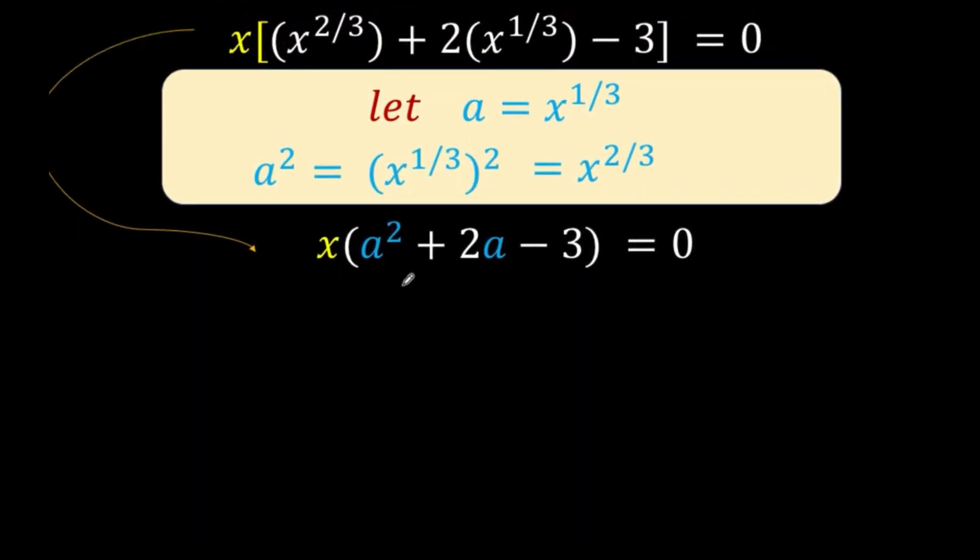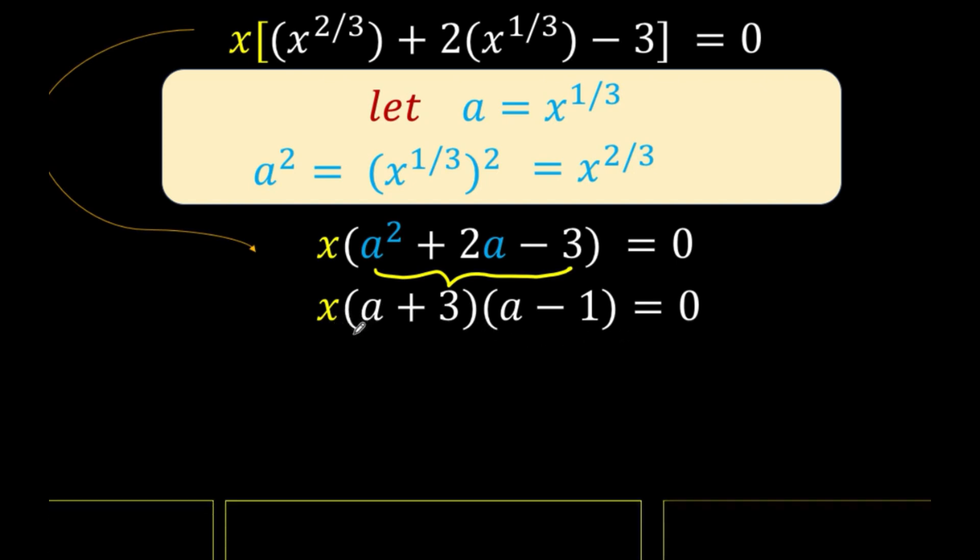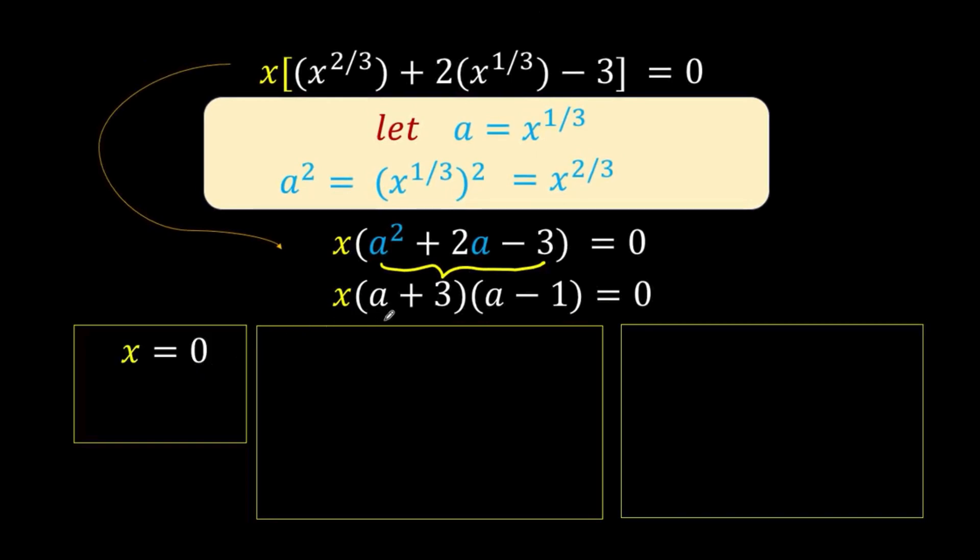So from this part, notice that a squared plus 2a minus 3 is factorable, and the factors of this trinomial are the quantity a plus 3 times the quantity a minus 1. We copy the x and equals 0 to arrive at the next line. We now have three factors whose product is 0. That means at least one of them must equal 0: x equals 0, or a plus 3 equals 0, or a minus 1 equals 0.